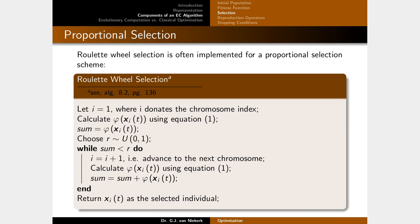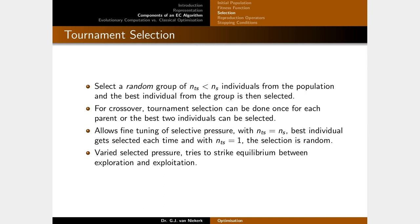One algorithm you can use to implement proportional selection is the roulette wheel algorithm. With tournament selection, you select a small subset of the entire group and from that subset select one or more individuals. You can fine-tune the selective pressure by choosing the subset size — a very small subset gives low selective pressure, and in the extreme case of a group of one you get random selection. A very large subgroup gives high selective pressure, approaching elitism.